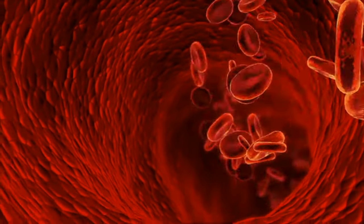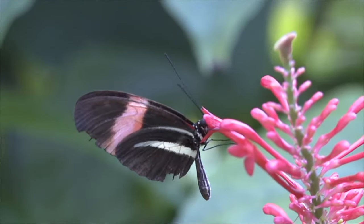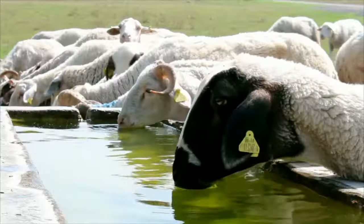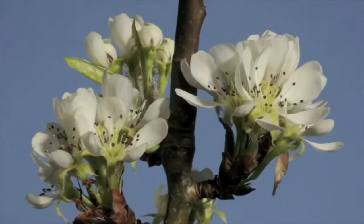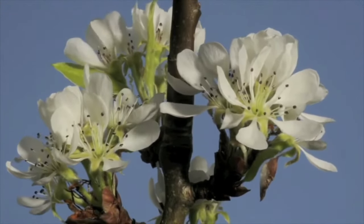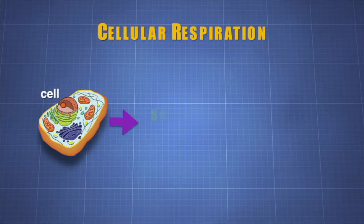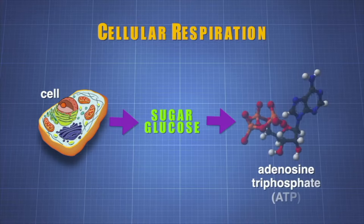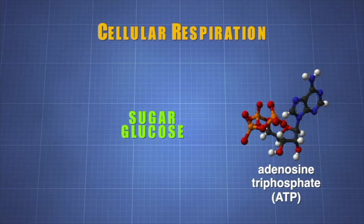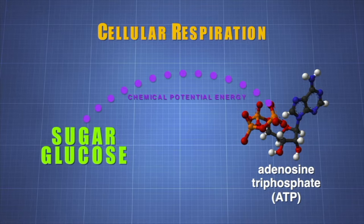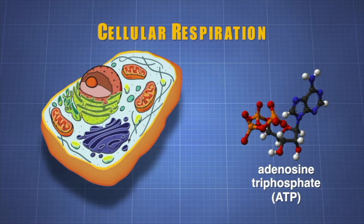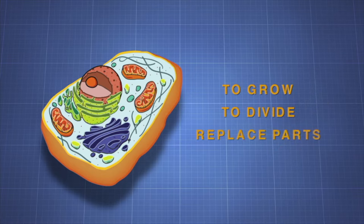Once oxygen passes through the thin wall of the alveoli into the blood, it travels to the cells. Oxygen is the fuel needed by cellular respiration. All living cells use cellular respiration to break down organic molecules and provide energy. Cellular respiration can occur with or without oxygen, but it is much more efficient with oxygen. Cells break down the sugar glucose and store its energy in molecules of adenosine triphosphate, or ATP. Cellular respiration transfers chemical potential energy from glucose into ATP, which powers nearly all cell activities — to grow, divide, replace worn-out cell parts, and many other tasks.